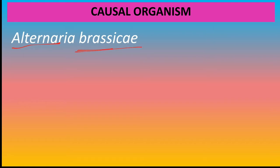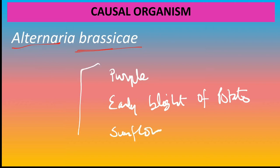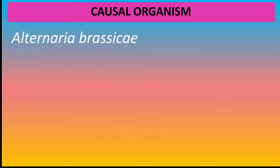हमारे syllabus में Alternaria से होने वाले कुछ और diseases भी हैं, जैसे कि Purple Blotch जो कि Alternaria porri से होता है, Early Blight of Potato जो कि Alternaria solani से होता है, और Alternaria Blight in Sunflower. तो यह तीनों diseases Alternaria से होती हैं।